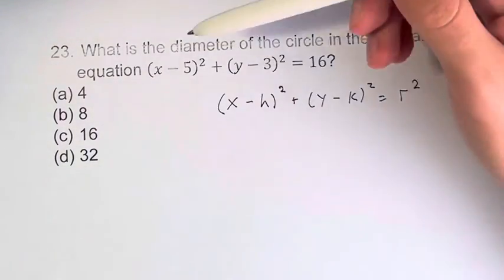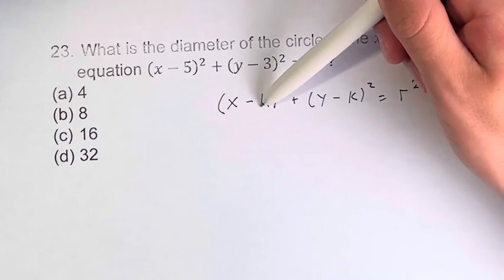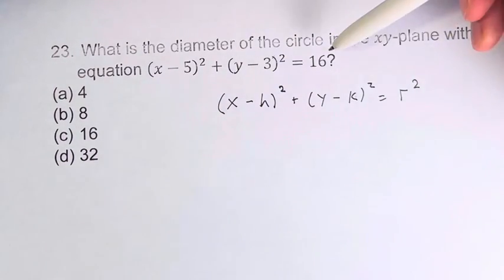We can see that's the form here, right? Where 5 is equal to h, 3 is equal to k, and r squared is equal to 16.